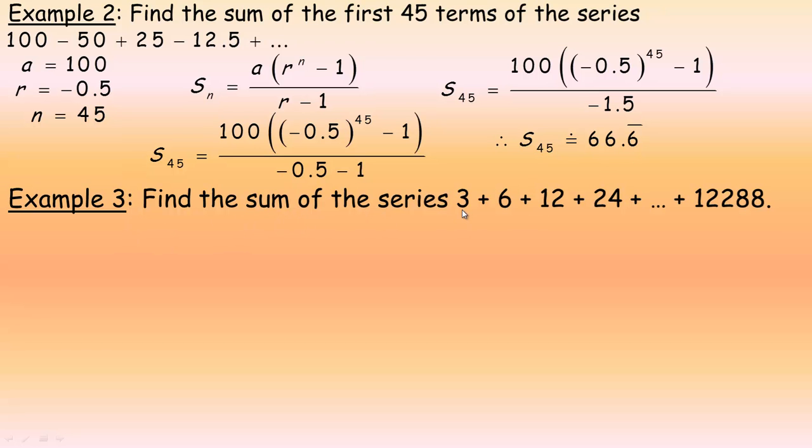Last example, find the sum of the series 3 plus 6 plus 12 plus 24, up to 12,288. Now, what's different between example 3 and the first and second one is you don't know how many terms there are. But if we were to find which term this 12,288 is, then that's what n would be. So, a would be 3. We're multiplying by 2 to go from term to term. So, r is 2. But we don't know n yet.